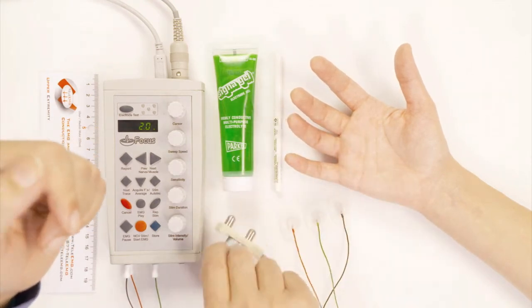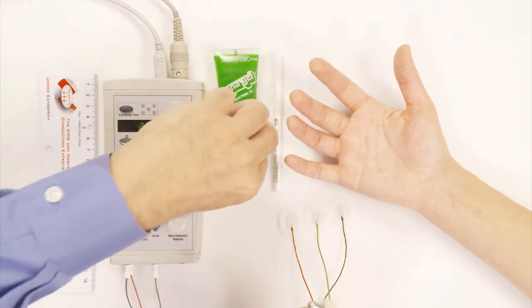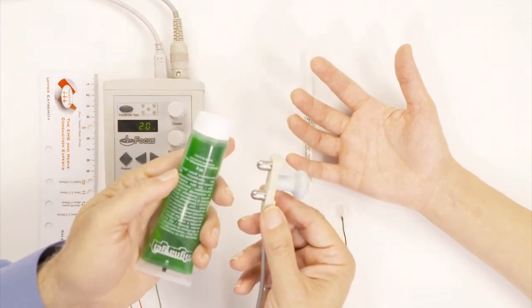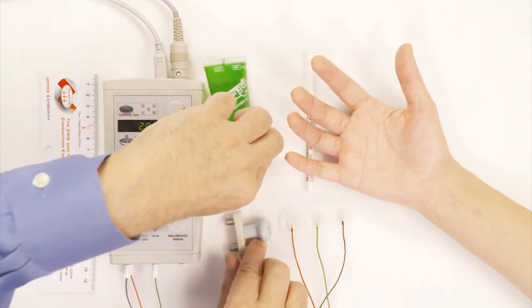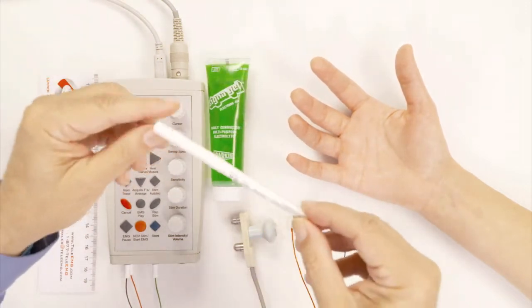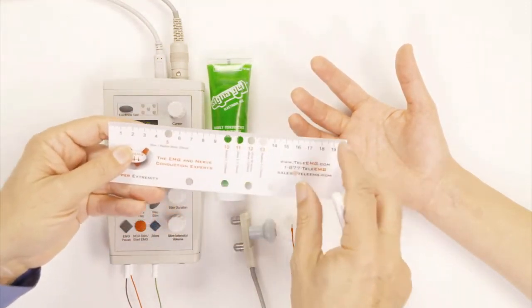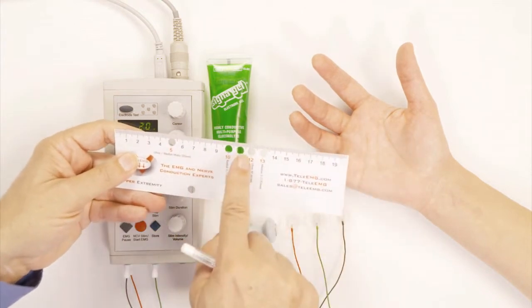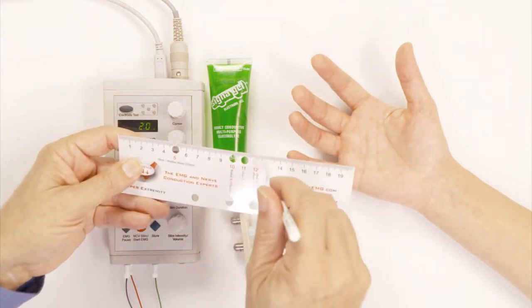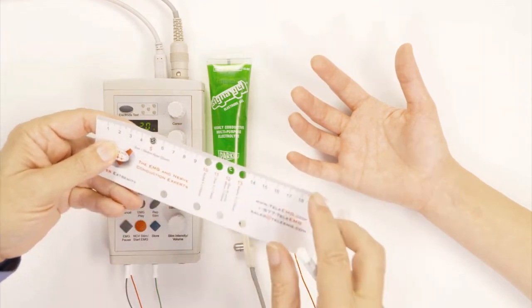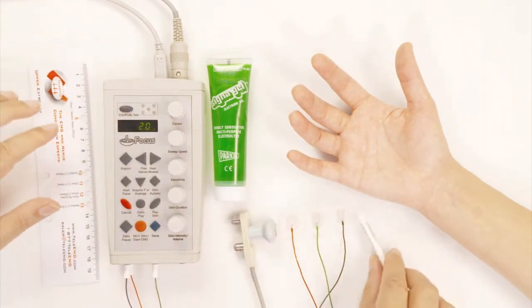Finally, in order to make sure that the electricity goes from the stimulator to the skin, we're going to use some gel, which you see here. And also, in order to measure, we're going to use this ruler right here. And as you see, the ruler has holes in it to eat for each nerve. And I will be putting the marker through the hole to actually mark the place where I'm going to be stimulating the nerve.